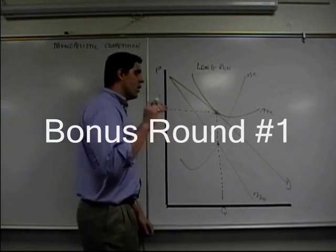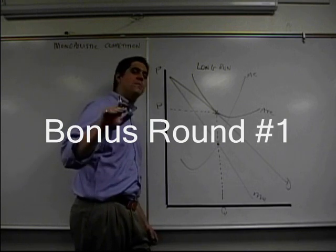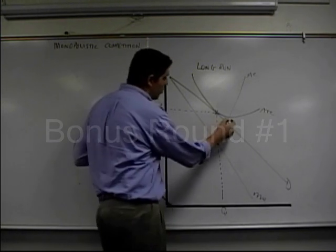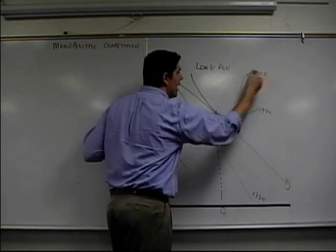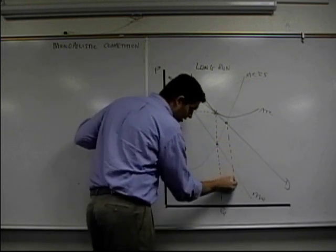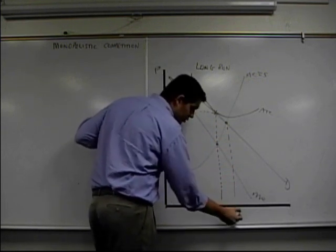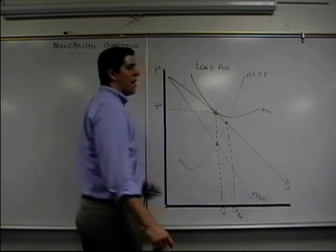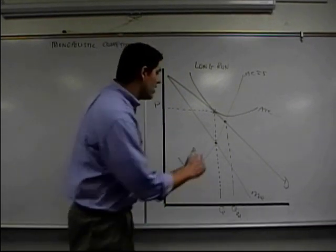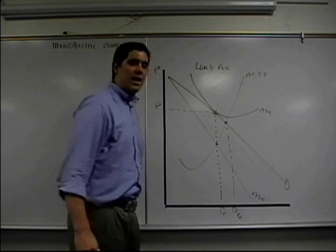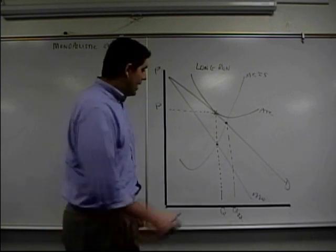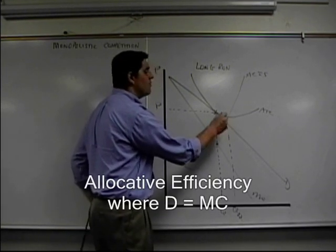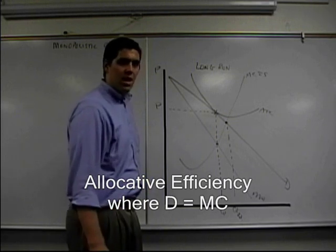Okay, bonus round. What I want you to do is this. I want you to identify the socially optimal quantity. Socially optimal quantity is right here where supply equals demand right there. This is how much they're underproducing because that's quantity socially optimal. This firm's underproducing because it wants to maximize profit, not produce the amount society actually wants them to produce. That is, again, the idea of socially optimal is the same thing as allocatively efficient.